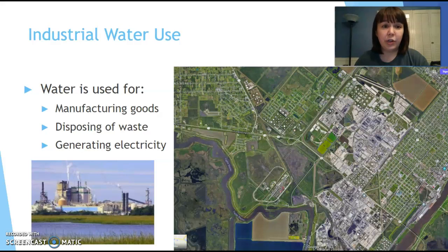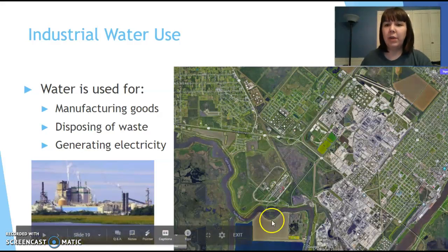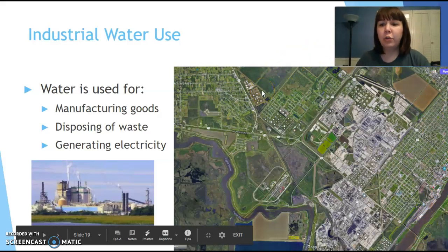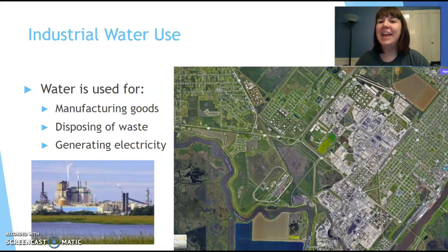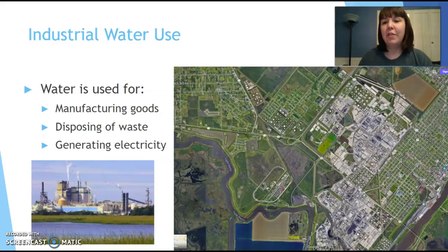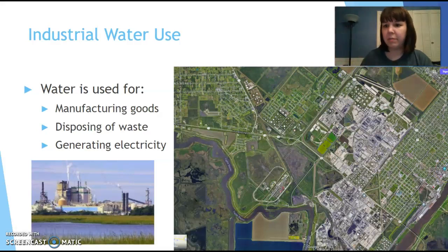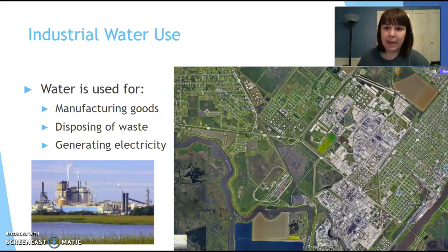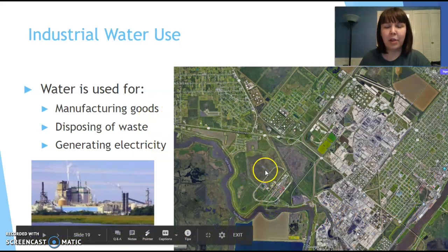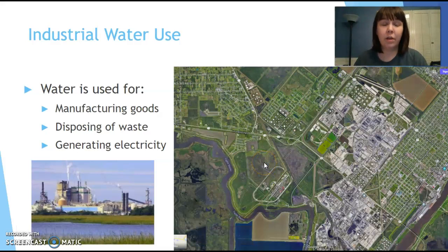Industrially, water is used for manufacturing goods, disposing of waste, and generating electricity. Here is an aerial view of Exxon in Port Arthur — similar to Texas Eastman in Longview — where you can see canals and bayous surrounding the facility. Those waterways are used to pull in water for cooling their processing plant. Your industrial areas, no matter what city they're in, will probably be near a water source — whether manmade like a canal or natural like a bayou — because they use that water for manufacturing, generating electricity, or cooling equipment.